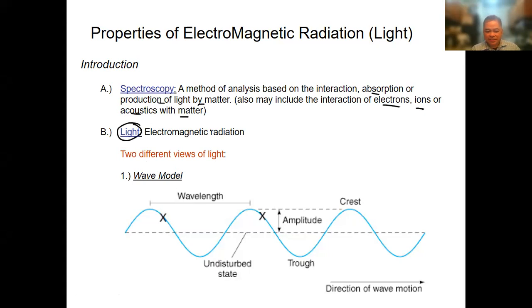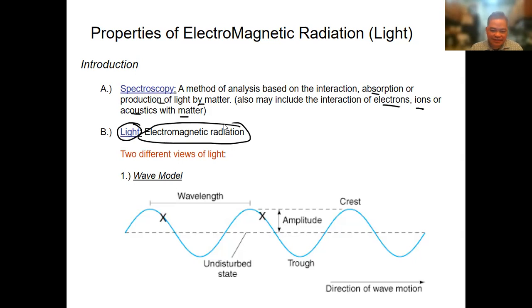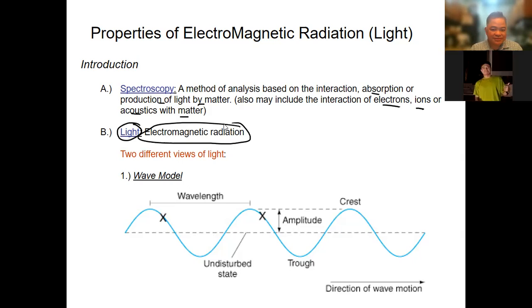How do we view light? I think this is a Gen Chem concept. Have you heard the so-called dual nature of light? Both particle and wave. You know what we call the dual nature of light - wherein light is either a wave or a particle. Yun yung dual nature ng light natin.